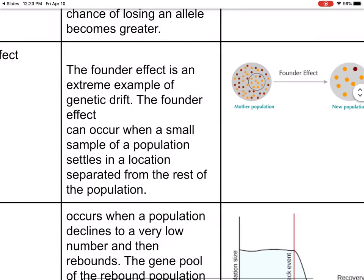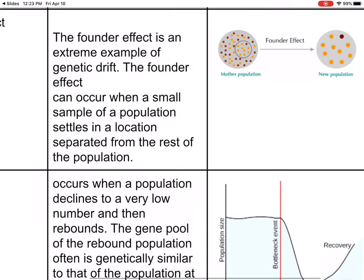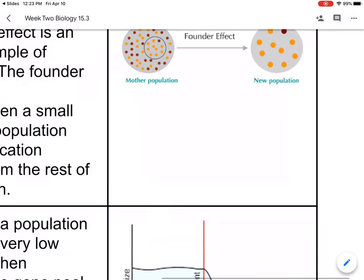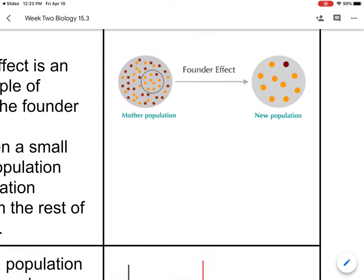The founder effect is an extreme example of genetic drift — it can occur when a small population settles in a location separated from the rest of the population. Here's the mother population — you can see it's a mix. The new founder population creates a kind of isolation, because those species, say they're lions, are going to mate with each other, so they won't be as diverse — they'll mostly all be one color.